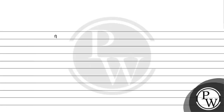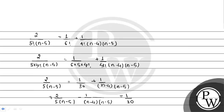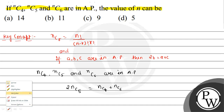N² minus 21N plus 98 equal to 0 का factorization करते हैं: N² minus 14N minus 7N plus 98 equal to 0। इससे मिलता है (N minus 14)(N minus 7) equal to 0। तो N equal to 7 या N equal to 14। यहां से हमें N की value 7 और 14 मिली। Options देखते हैं — N equal to 14 correct answer है।